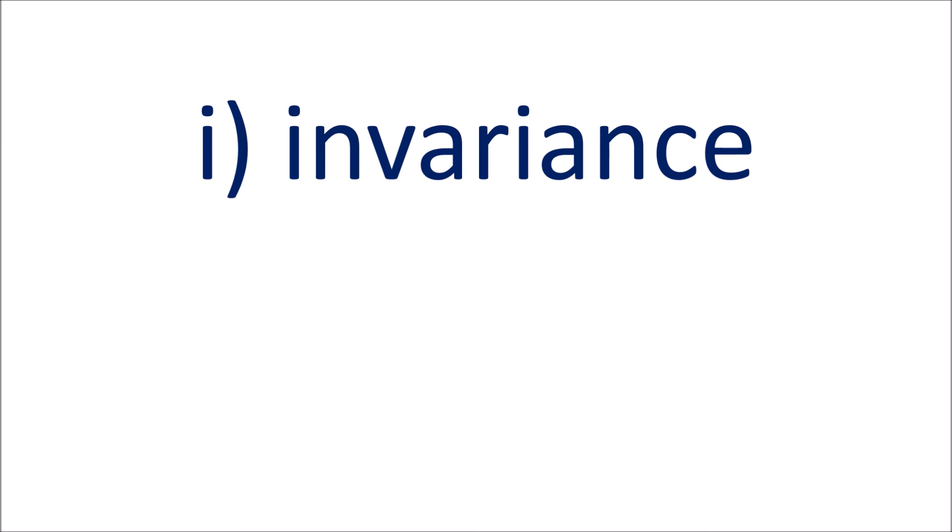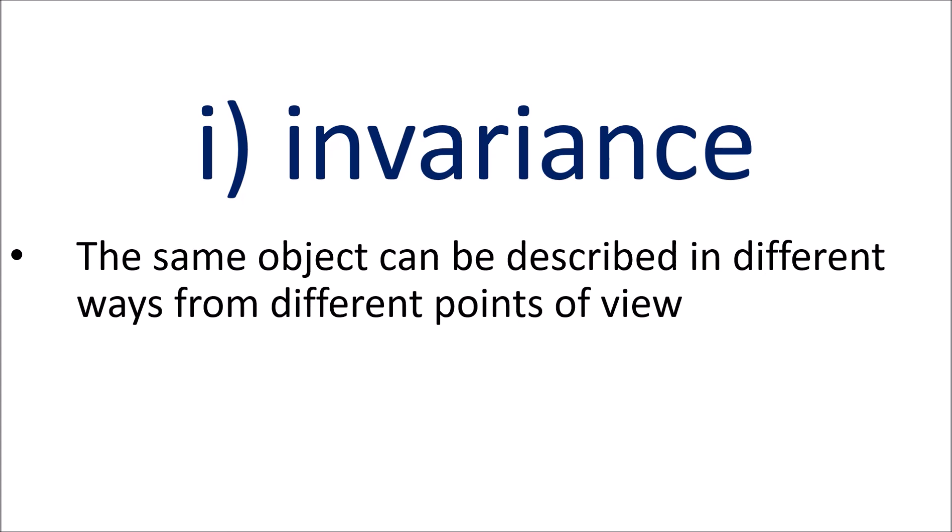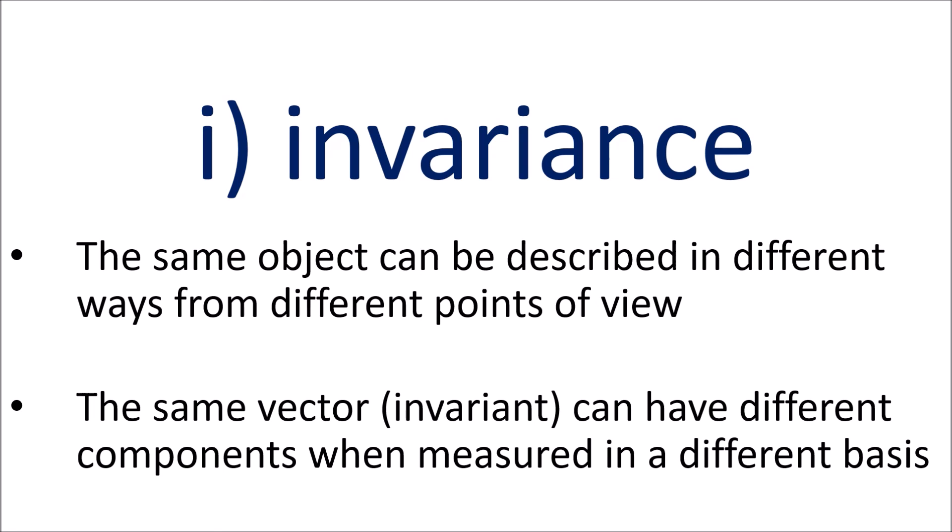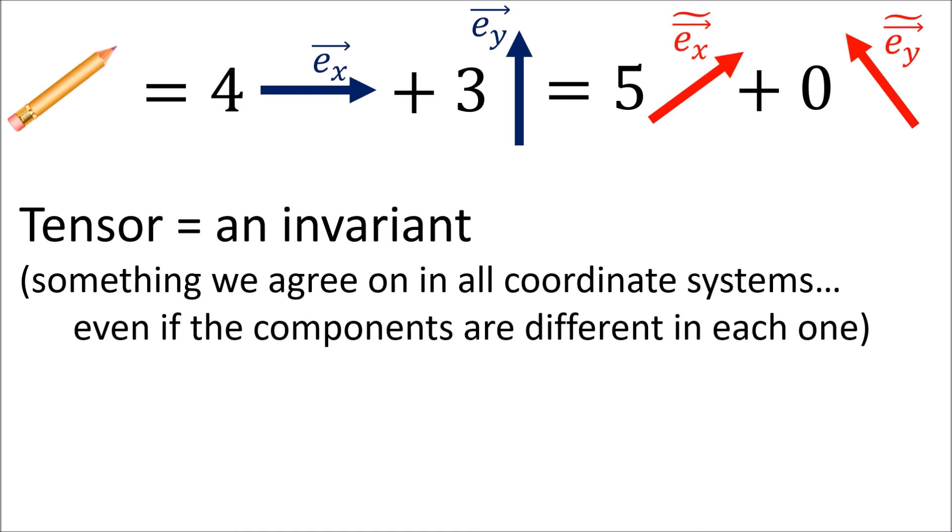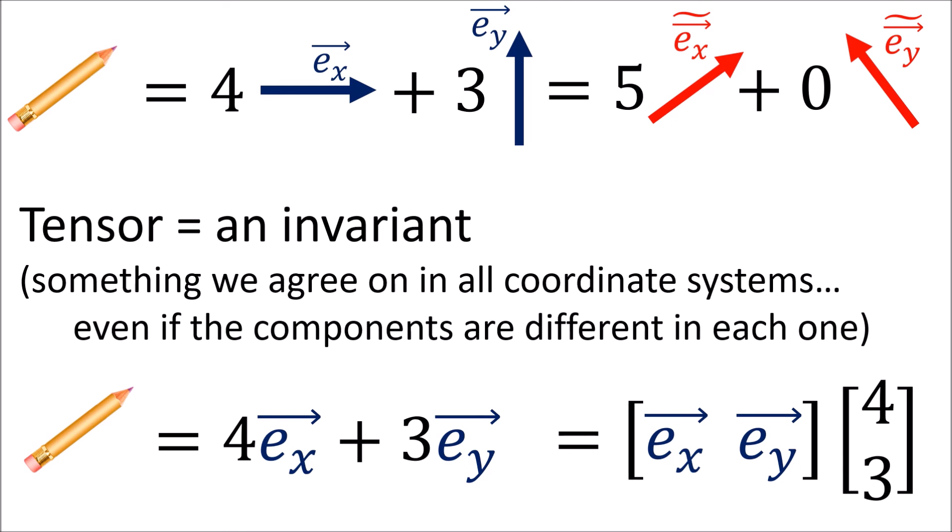So this is the main idea behind invariance. Invariance means the same object can be described in different ways using different points of view. More specifically, the same vector, which is invariant and unchanging, can have different components when measured in a different basis. Later in this series, we'll talk about tensors. A tensor is just another word for an invariant object, something that's unchanging that we all agree on, but that can have different components if we measure it using different coordinate systems. And we'll see that we can write tensors as arrays. For example, we can write the vector 4ex plus 3ey using array multiplication, with the basis vectors in a row and the vector components in a column. We just use the array multiplication rule of first entry times first entry to get 4x, and second entry times second entry to get 3ey.